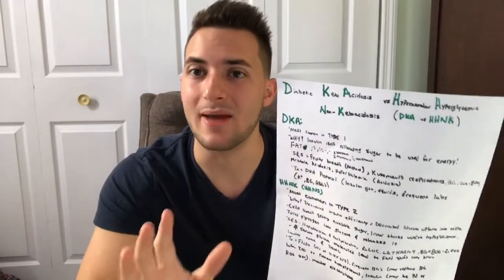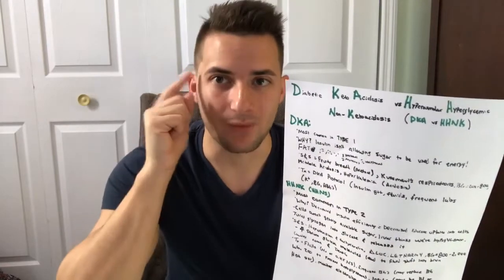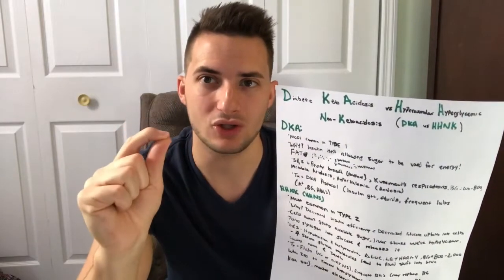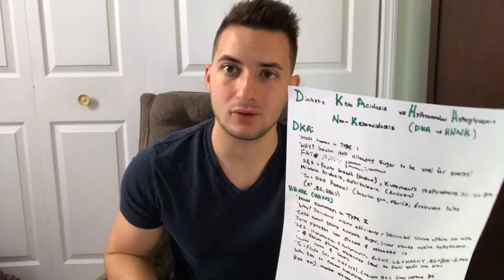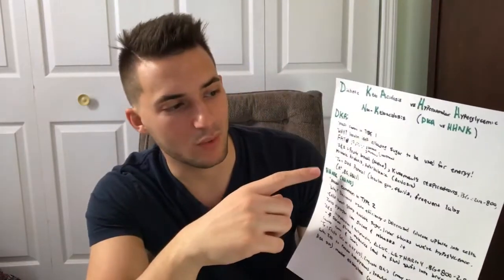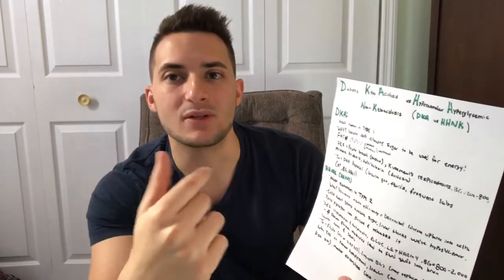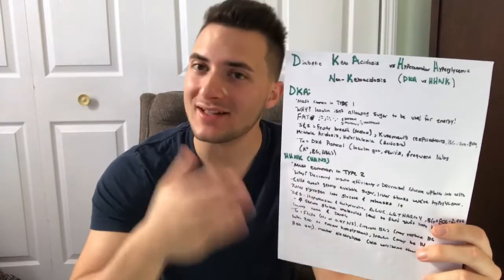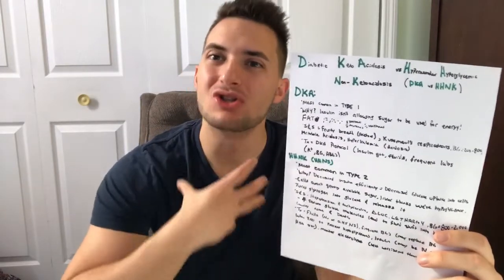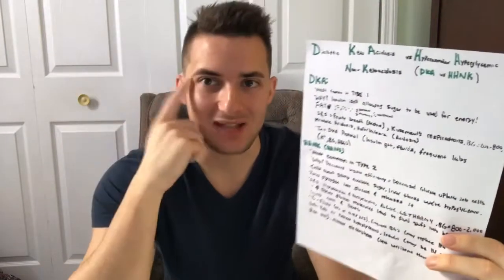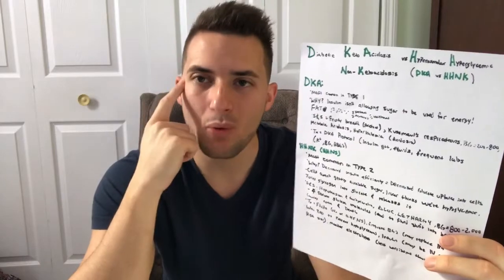That happens in type 1 diabetics — because they are not making insulin, the body needs another source of energy and it breaks down fat. That's the K in DKA, and that's how you remember it's type 1 diabetics. Signs and symptoms: fruity breath. Why? Because they have acetone built up — acetone is one of the ketones. Fun fact, it's also found in nail polish. They get this fruity breath from the acetone. They have metabolic acidosis — that's a key point here.